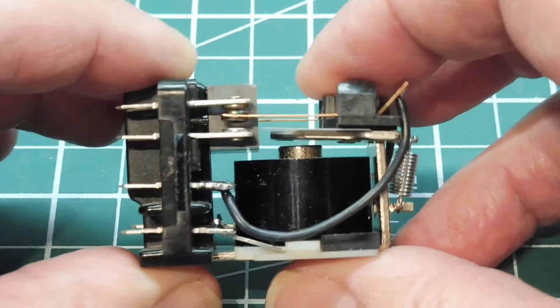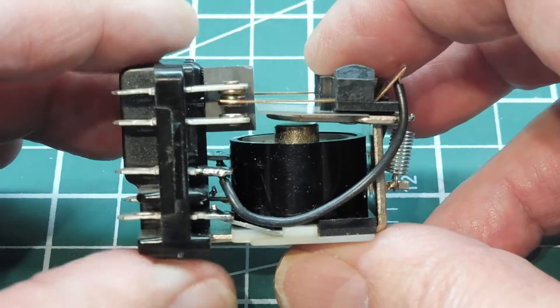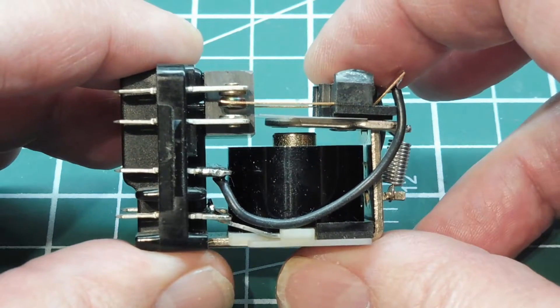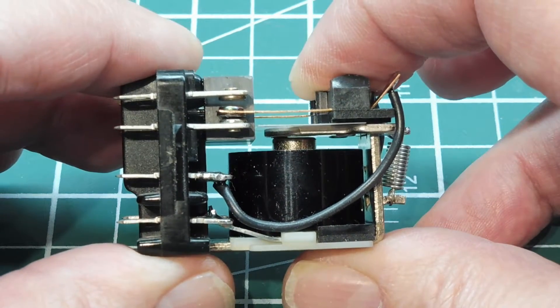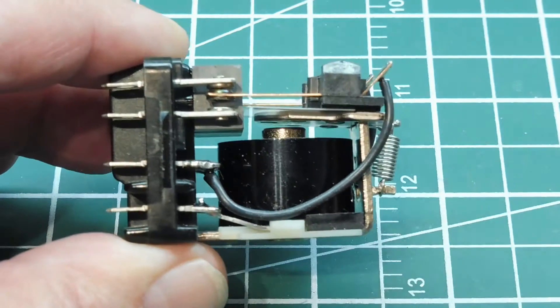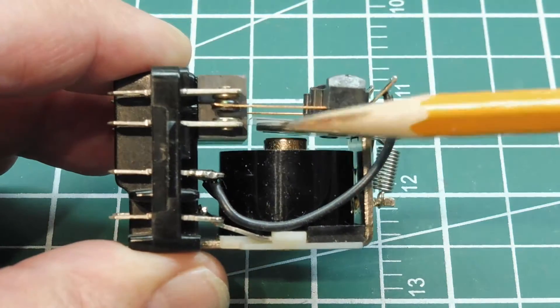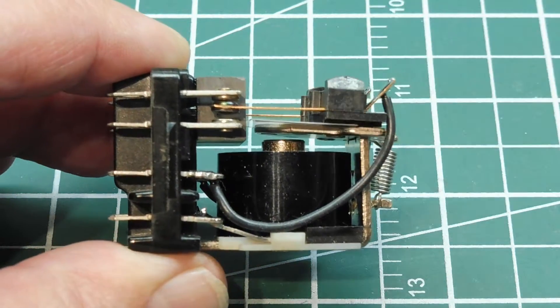Now when a relay switches an inductive load, like an induction motor, when armature pulls in, turns on the motor, and then when it shuts it off, there'll be a spark across the contacts because you're shutting off an inductive load.